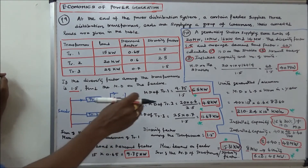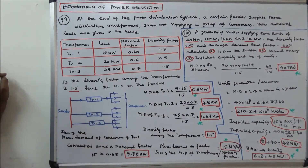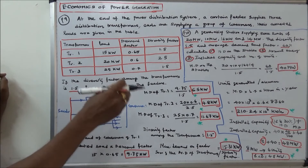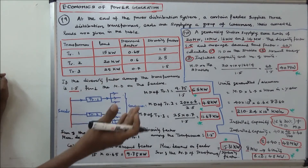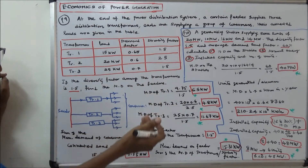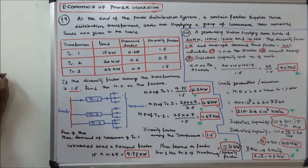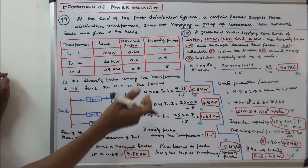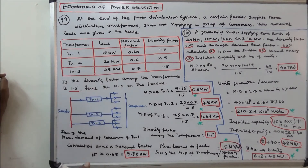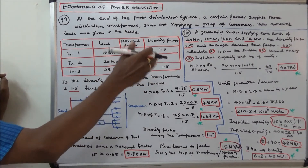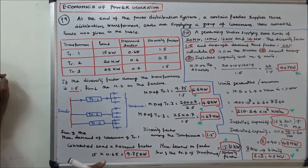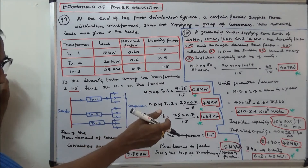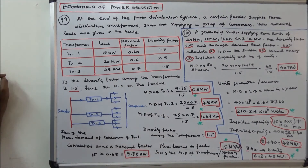Third, we calculate the installed capacity. Installed capacity is 15 to 20 percent above the maximum demand plus the maximum demand itself. Choosing 20%, that is 20% of 40, which is 8. So 8 plus 40 equals 48 megawatts — that is the installed capacity. For the number of units, I choose 6 units, each of 8 megawatts: 8 times 6 equals 48 megawatts.